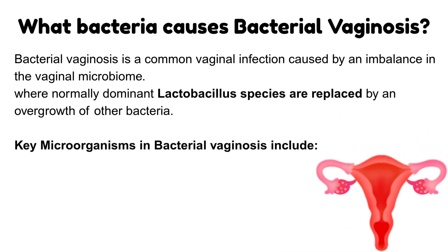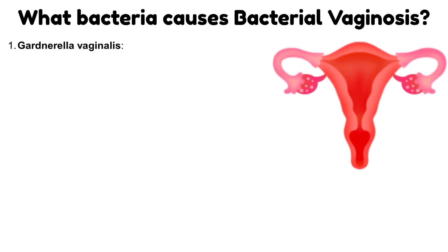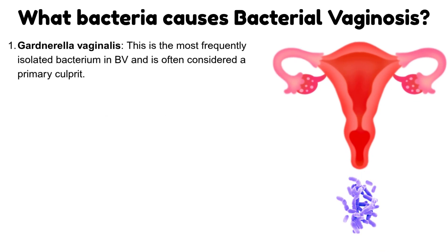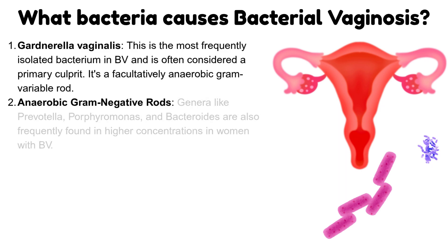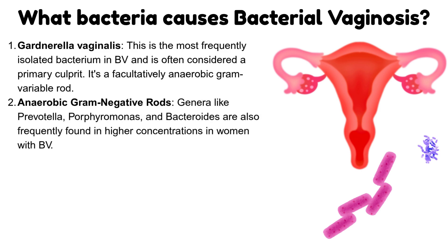Key microorganisms in bacterial vaginosis include Gardnerella vaginalis, the most frequently isolated bacterium and often considered a primary culprit — it is a facultatively anaerobic gram-variable rod. Anaerobic gram-negative rods of genera like Prevotella, Porphyromonas, and Bacteroides are also frequently found in higher concentrations in women with bacterial vaginosis.